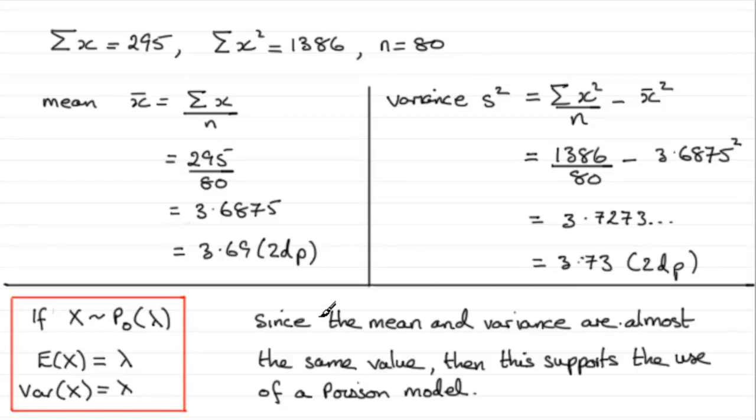So my answer would be something like this: since the mean and variance are almost the same value, then this supports the use of a Poisson model.